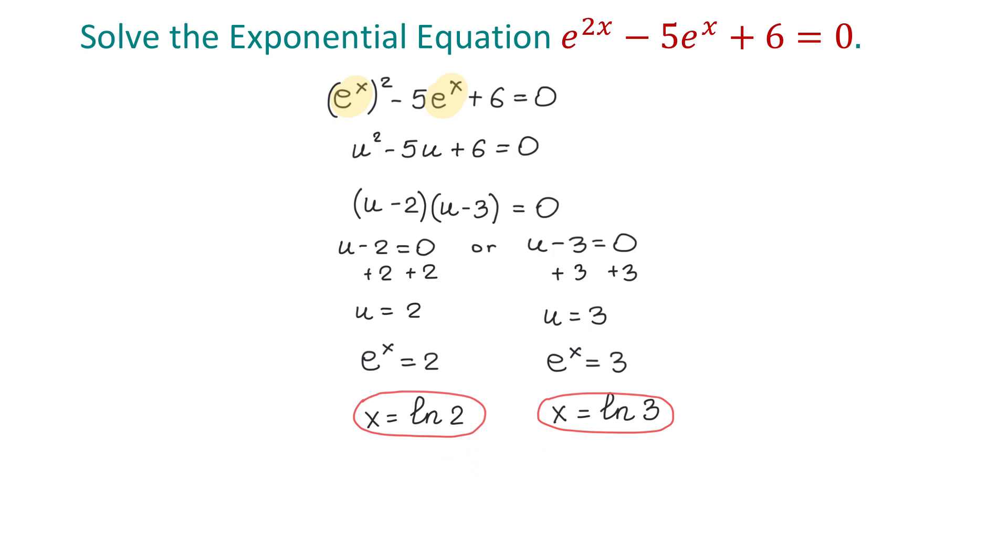If we want to approximate x, we can use a calculator. Natural logarithm of 2 is approximately 0.7 and natural logarithm of 3 is approximately 1.1.